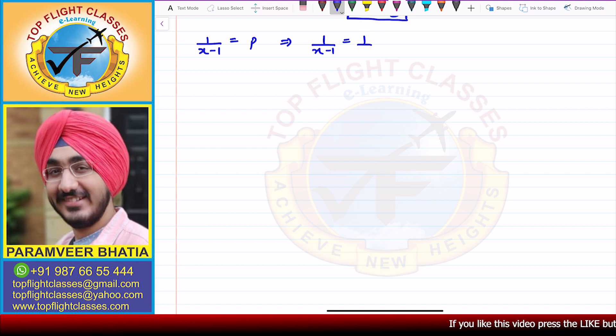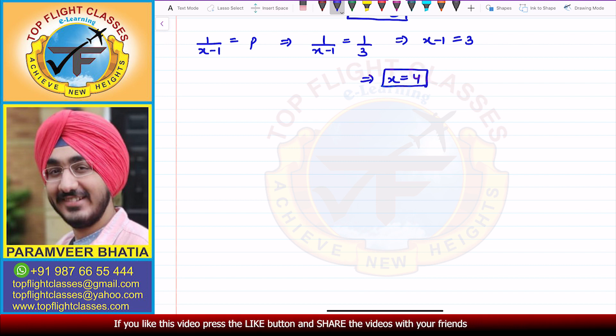So this implies that 1/(x-1) = 1/3. This implies that x - 1 = 3, and from here I get that x = 4.